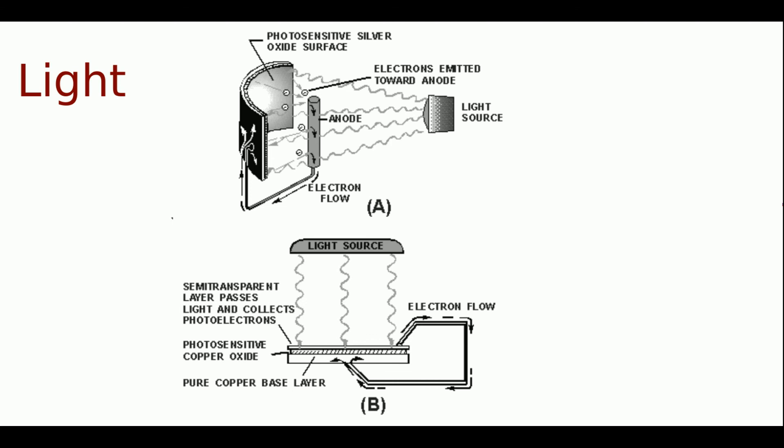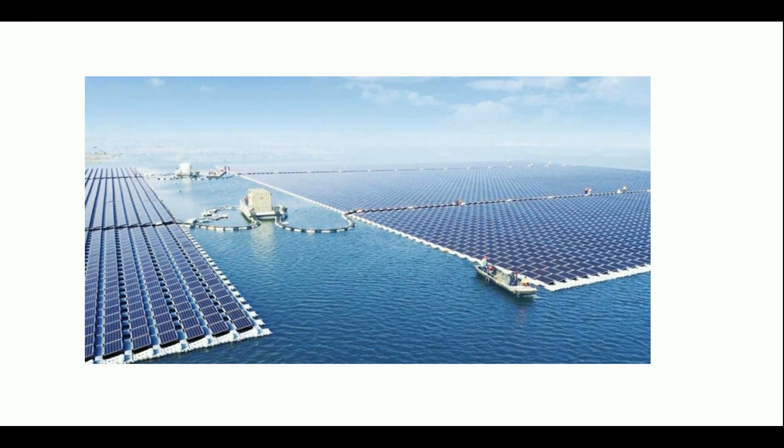Our final one is light, and this one we just use a photovoltaic cell to capture the photons and convert it into power. This is mostly used for solar power. Here I got a solar power farm, and now you know that the five different ways to generate electrical voltage.